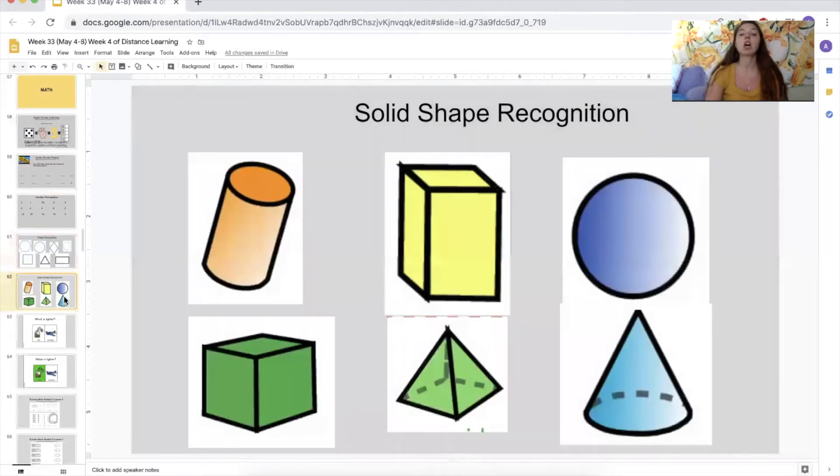Let's go on to solid or 3D shapes. What is this shape that I'm pointing at over here? Look for my clicker. A sphere. It kind of looks like a circle, but remember, it's 3D, so we know it's a sphere. Very good.